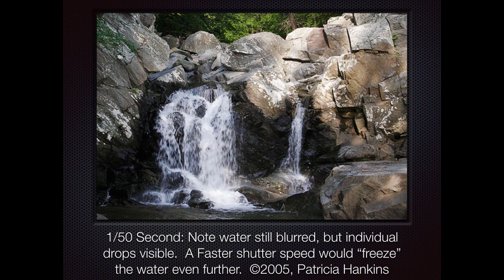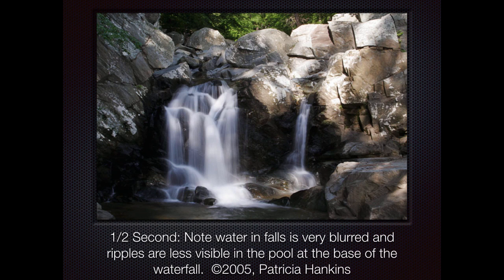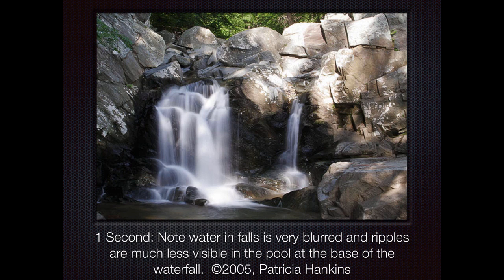At 1/50th of a second, the water is slightly blurred but we can still see some individual drops. At 1/10th of a second, the waterfall is starting to get much more streaky. At half a second it's getting much smoother — the pool at the bottom is getting smoother because the ripples are moving. At 1 second, the water is almost entirely smooth and becoming wispy. The other thing starting to happen is the rocks are getting overexposed, because 1 second is a pretty long exposure for a daytime shot. So you're balancing all of these factors to get the results.